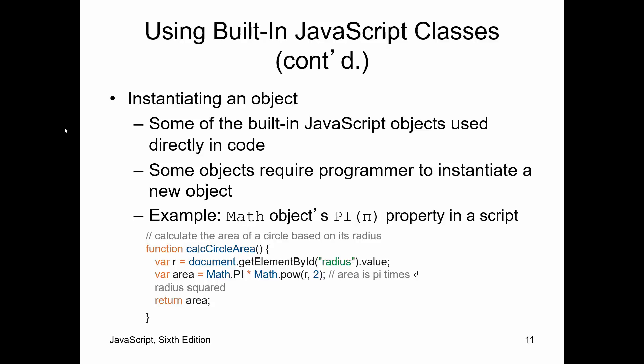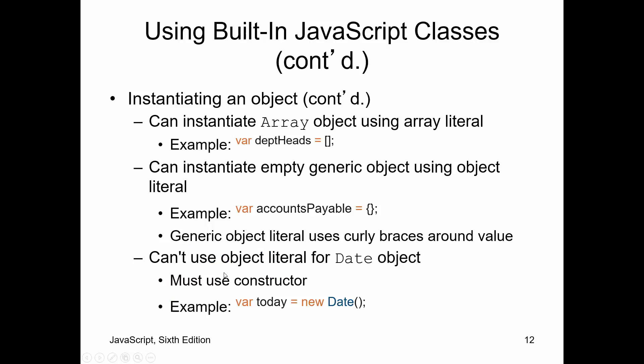Instantiating an object. Some of the built-in JavaScript objects can be used directly in code. For instance, you can use the math class without having to create a math object. It's just the name of the class, math.py. Kind of nice. You can instantiate an array object in different ways. We looked at that already. We already had the chapter on arrays.